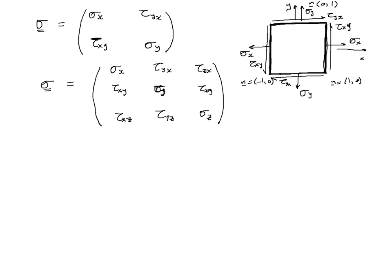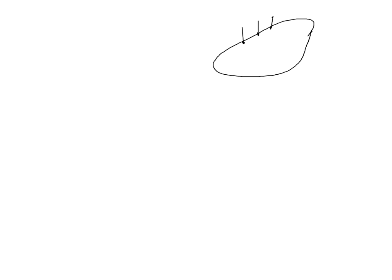Now let us look at the equations of equilibrium. To understand how they are derived, imagine a body acted on by a combination of forces: some on the surface, and some distributed throughout the volume. These latter are called body forces, calculated per unit volume. If we call the body force vector b, it can change from point to point in the body.